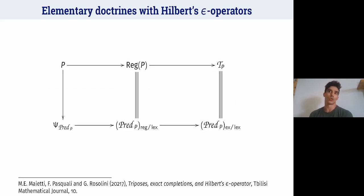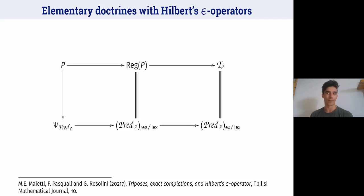Finally, I conclude with the case of elementary and existential doctrines equipped with the Hilbert epsilon operator. This provides an alternative proof of a result due to Maglietti and Rosolini: an elementary and existential doctrine equipped with the Hilbert epsilon operator is the existential completion of itself. Therefore, the regular completion of P is equivalent to the regular completion of the category of predicates of P, and the exact completion of P is equivalent to the exact completion of the category of predicates of P. This is exactly the result of Maglietti, Rosolini, and Pasquali.